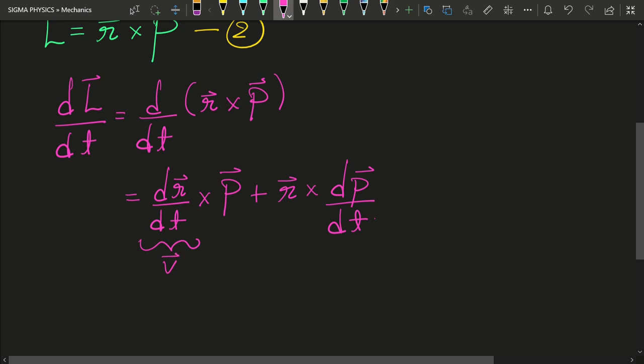Now dr upon dt is nothing but the velocity of the body and the momentum is equal to mass times velocity. And hence the velocity is obviously parallel to the momentum and hence the cross product will become 0.